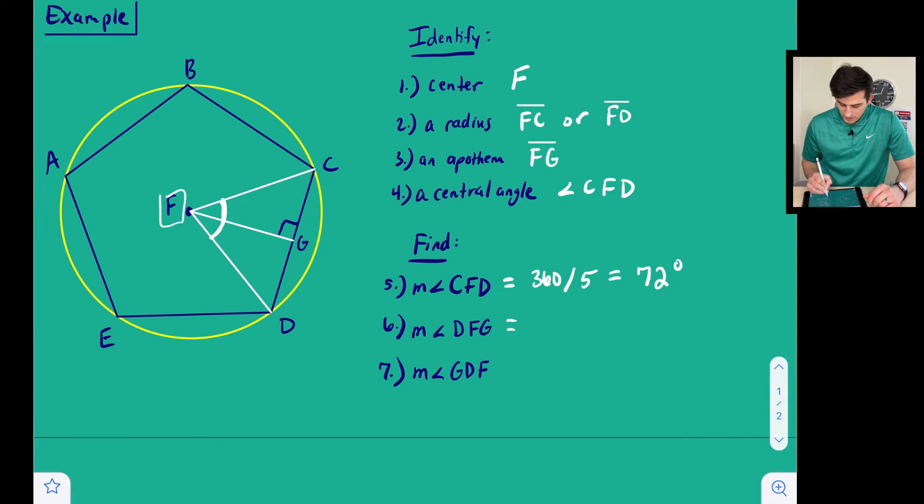Next we want to find the measure of angle DFG, which would be just this part of our central angle. If we just said that the apothem bisects our central angle, then this angle DFG would be half—that's what bisect means—half of our central angle. So we can take 72 and divide it by 2, and we get a degree measure of 36.